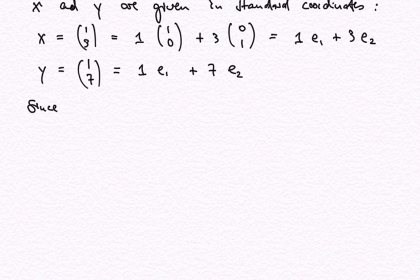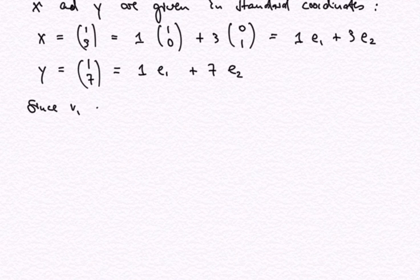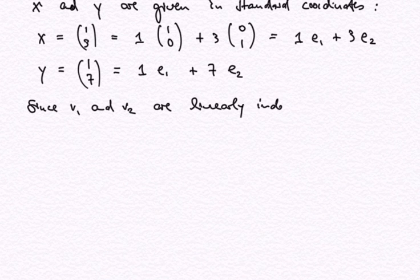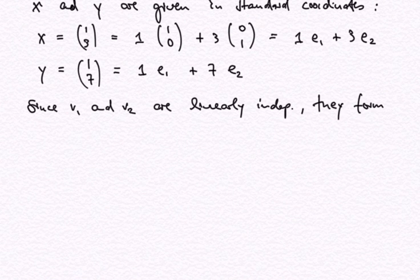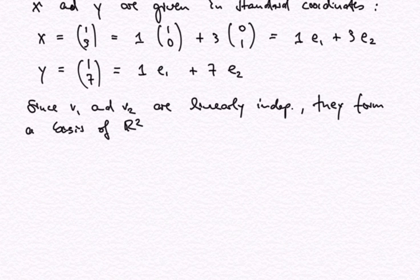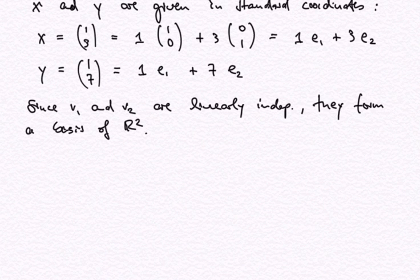Since the two eigenvectors V1 and V2 are linearly independent, they form a basis of R2. This means we can also express X and Y as linear combinations of V1 and V2. In other words, we can use V1 and V2 as a basis — or still in other words, as a coordinate system in which we can express X and Y.